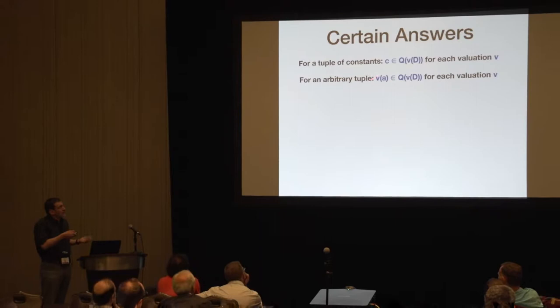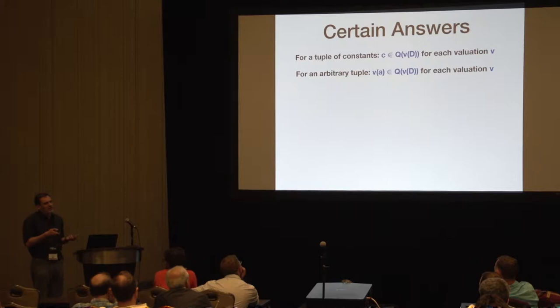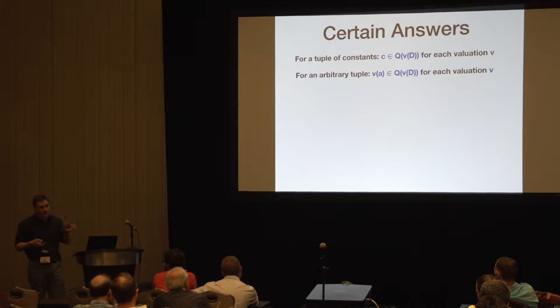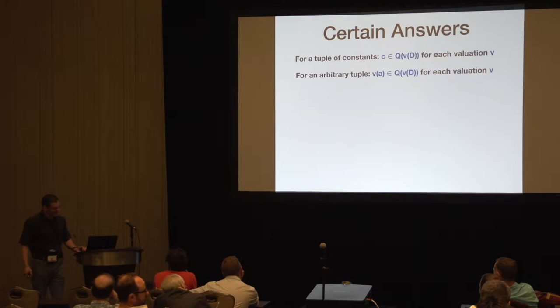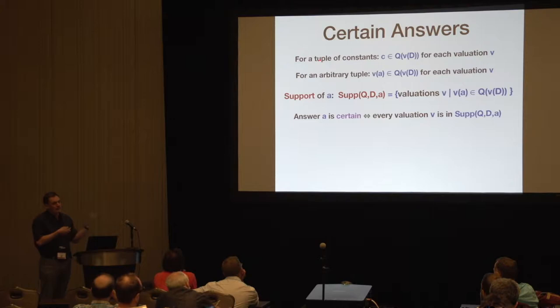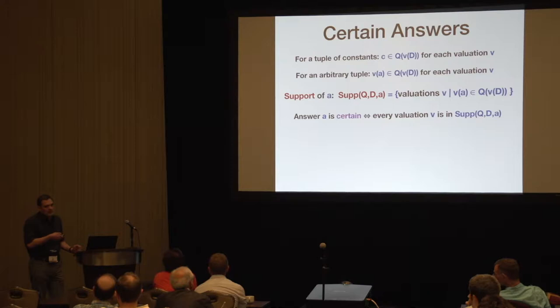What are certain answers? If I have a tuple of constants, it is a certain answer if it will be in the result of Q on every such database — apply any valuation and the tuple should be in the answer. There is a slight generalization due to Lipsky: for arbitrary tuples that may contain nulls, if I take any valuation and apply it to the tuple, it should be in the result of the query when I apply this valuation to the database. Using that, I can define the support of a potential answer tuple, which is all valuations V that witness that the tuple is in the answer to the query. An answer is certain if every valuation is in the support.